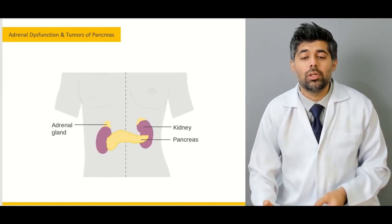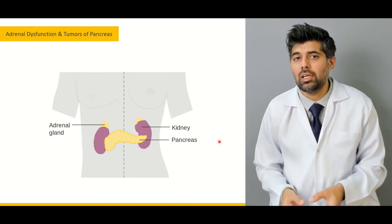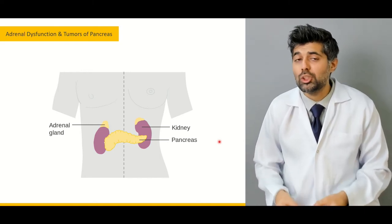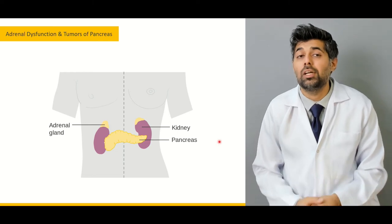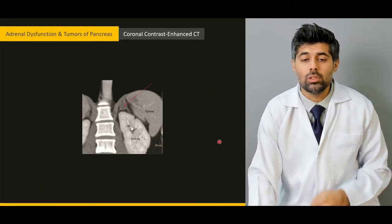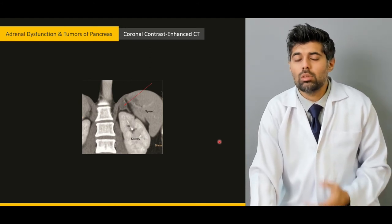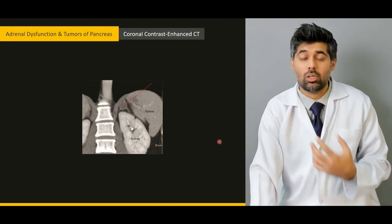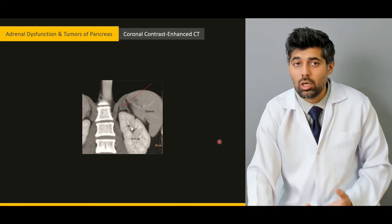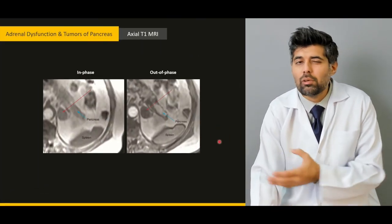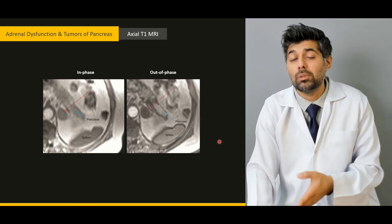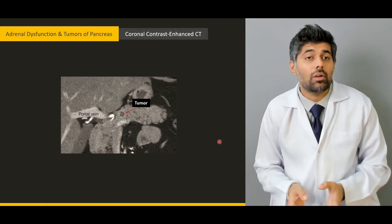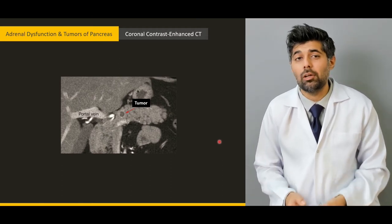Then we'll learn about the anatomy of the adrenal gland — why it's called the suprarenal gland and why the positioning of the pancreas here is very important. We'll learn about what is a tumour of the adrenal gland, what is the difference between an adenoma, a carcinoma, or a pheochromocytoma, and how different phases of an MRI may help us distinguish them. Then we'll learn about incidental adenomas — what they are, how they are found, and why they are very important.